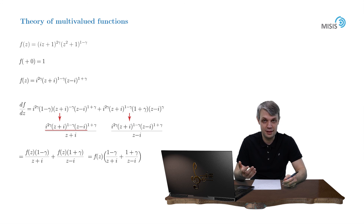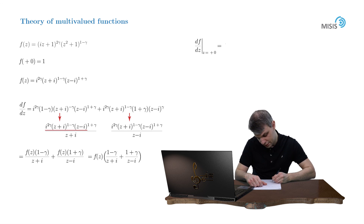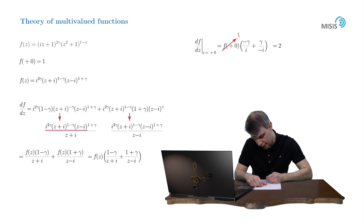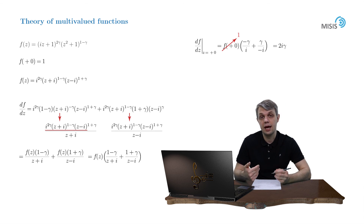We simply plug in z equals plus zero. So df over dz at z equals plus zero equals f of plus zero, which is 1, times (negative gamma over i plus gamma over negative i), which gives 2i gamma. That's our final answer. This is how it always works, and you will find it useful when you compute integrals containing that kind of multi-valued functions and need to find the residue of the function at some point.